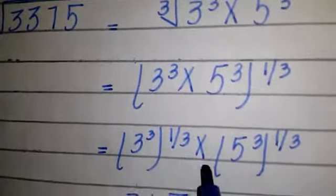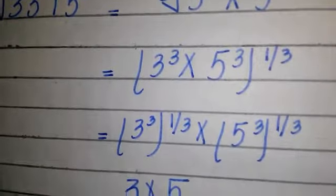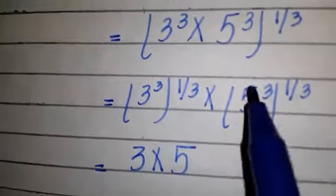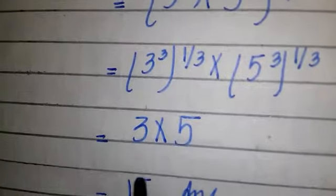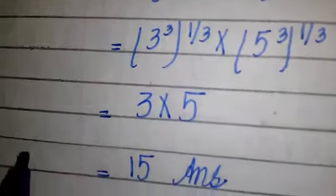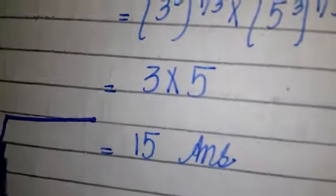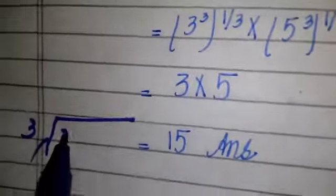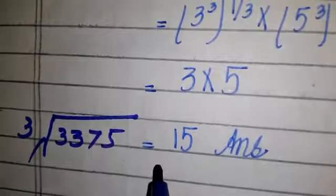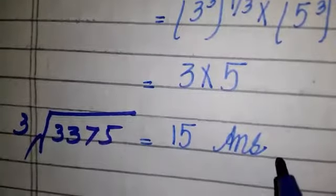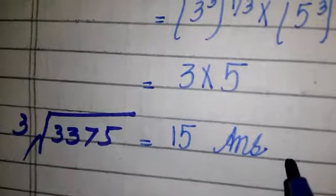This equals 3 to the power 3 to the power 1 over 3, into 5 to the power 3 to the power 1 over 3. The powers cancel each other, so we get 3 into 5 which equals 15. Therefore, the cube root of 33375 is equal to 15. Thank you for watching, please subscribe to my channel.